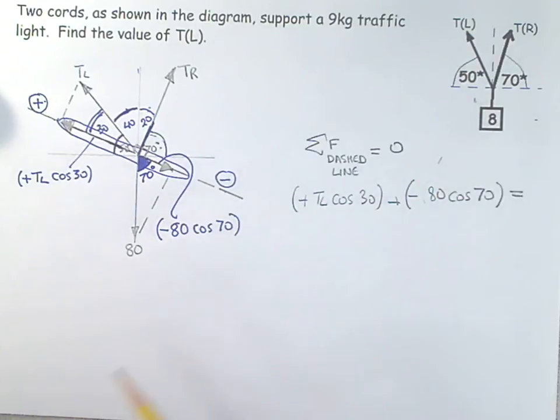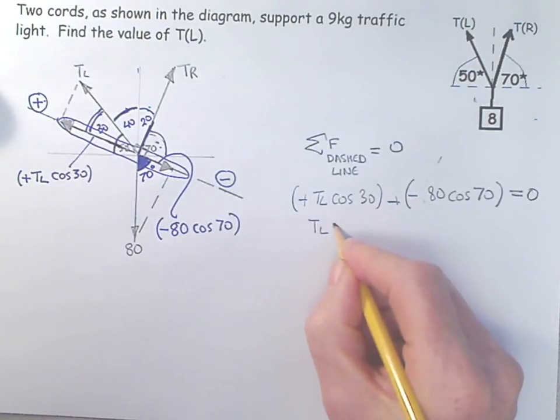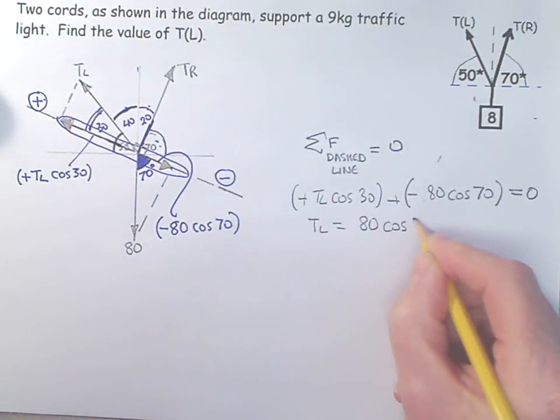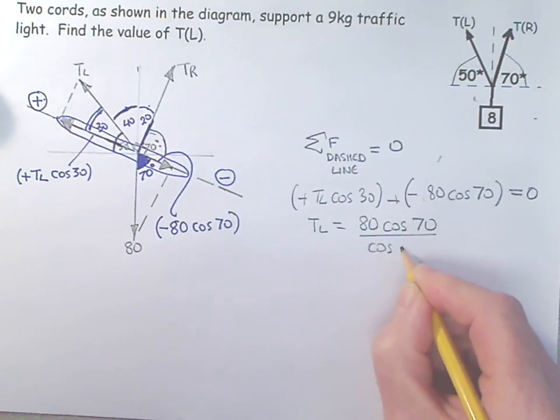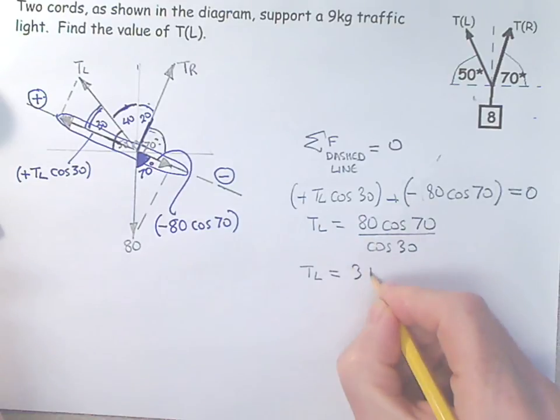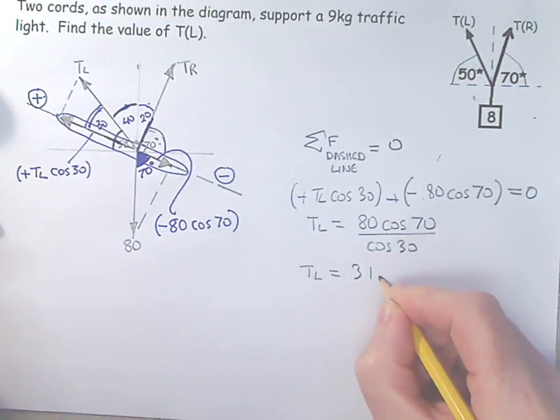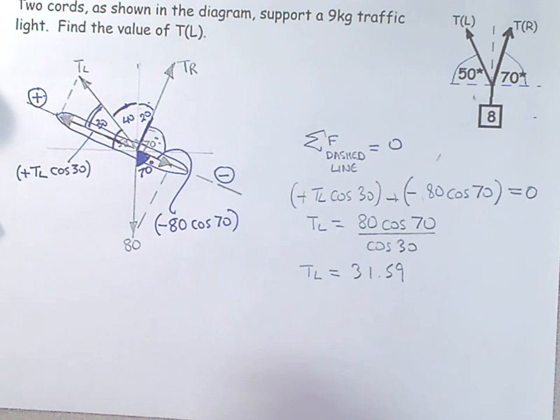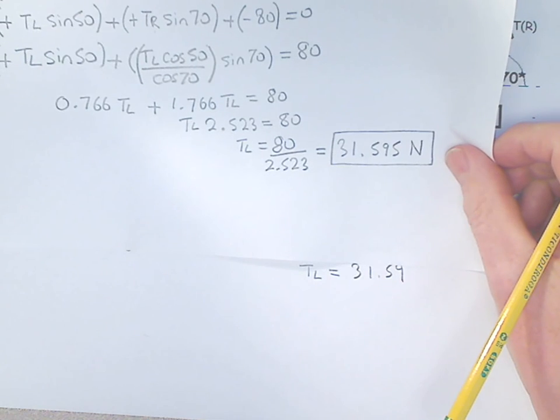Let's just erase that. So if that equals zero, then we have TL is equal to 80 cosine 70 over cosine 30. TL must equal. Let's have a look at this. We're going to get 80 times cosine of 70 divided by the cosine 30. And that's going to be 31 point five nine newtons, which was basically the same as we had before.